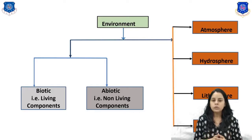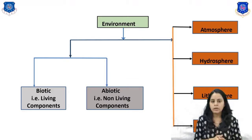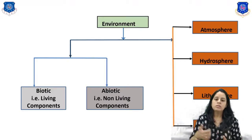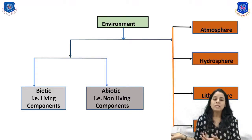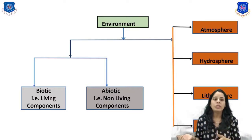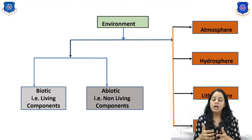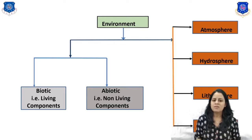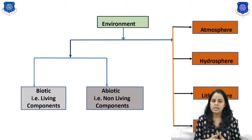The classification of environment falls into two categories: the first is the biotic component and the second is the abiotic component. Biotic means all living organisms — such as plants, algae, and humans. Abiotic means non-living components — such as water, nutrients, phosphorus, carbon, nitrogen, and various gases.